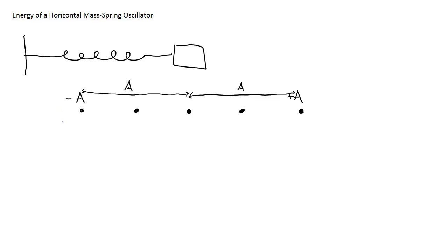At every single one of these points, starting with the three main points, I'm going to label our kinetic energy, our spring potential energy (U_S), and then our total energy. Same thing at equilibrium: kinetic energy, U_S, and total energy E.